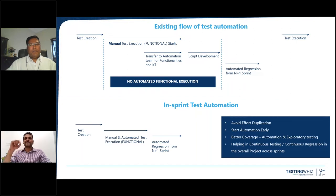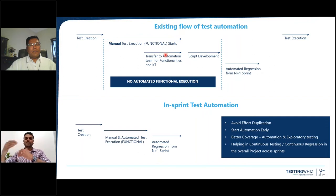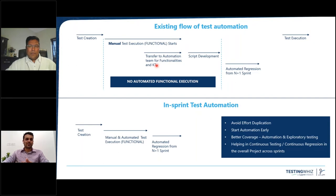To demonstrate where we are exactly in the current situation: the existing flow of test automation starts with creating manual test cases first, then going ahead with execution of manual test cases. Simultaneously, there is another team focused on automation, learning the technology. If they need to automate something, they need to write code in Java, .NET, PHP, Python, Perl, Ruby, etc. So there's an additional effort required.